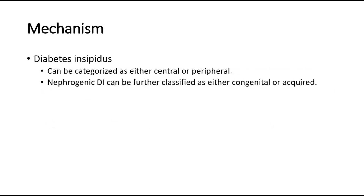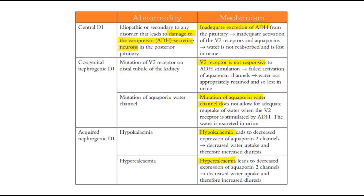In diabetes insipidus, it can be categorized as either central or nephrogenic. Nephrogenic diabetes insipidus can be further classified as congenital or acquired. In the central type, it can be idiopathic or secondary to any disorder that leads to damage to the vasopressin-secreting neurons in the posterior pituitary. There is inadequate secretion of ADH from the pituitary, causing inadequate activation of V2 receptors and aquaporins, so water is not reabsorbed and is lost in urine, causing polyuria.